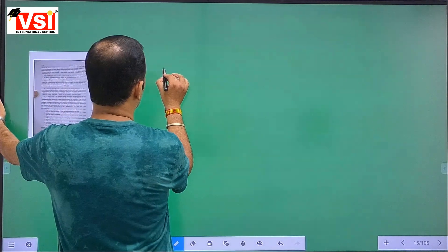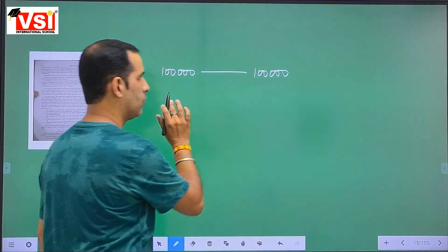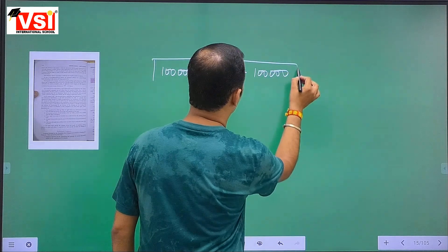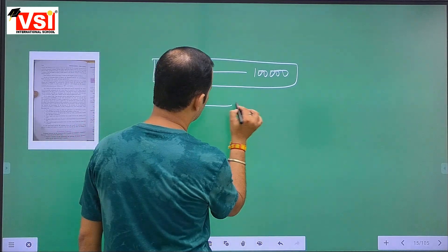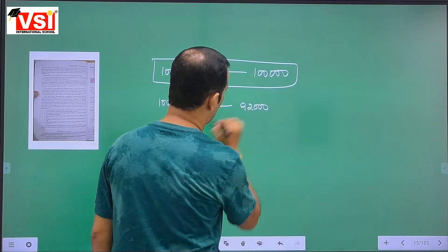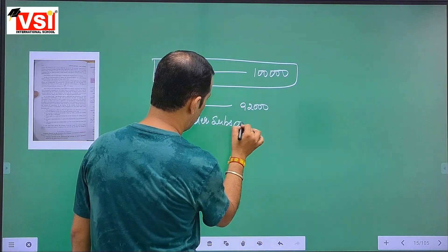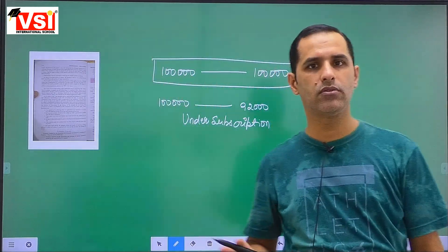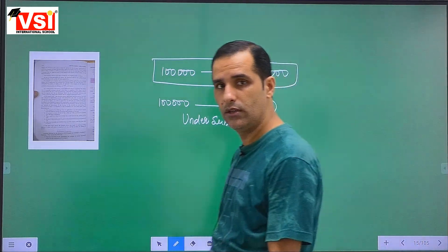In case of over subscription: if the company issued 1 lakh shares and received applications for only 1 lakh, it allots all shares fully — no under or over subscription. Under subscription means fewer applications than shares issued — for example, if 1 lakh shares are issued but only 92,000 applications received. The minimum subscription criterion of 90% (90,000) is still met, so the company allots only 92,000 shares.